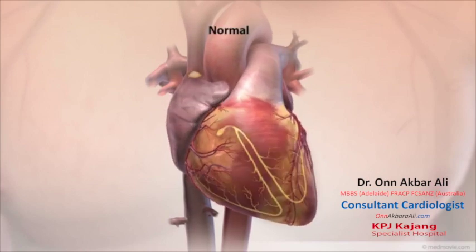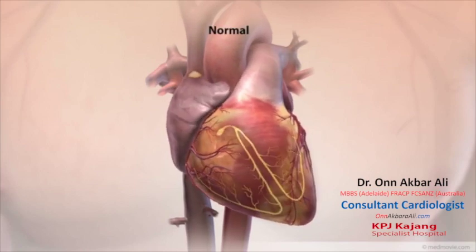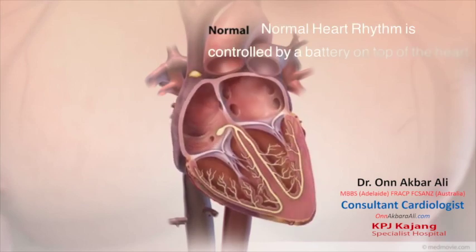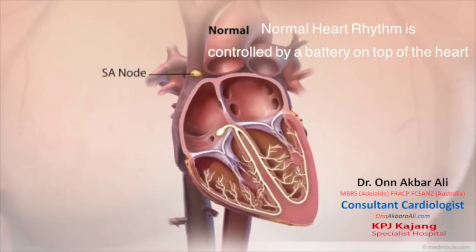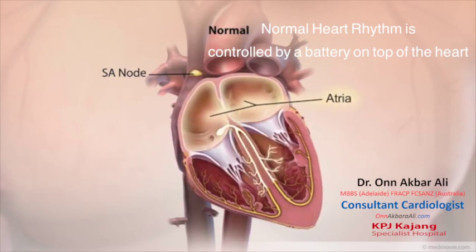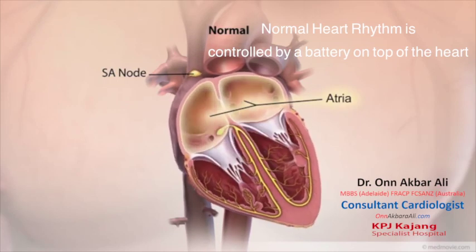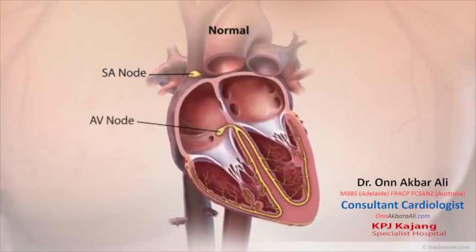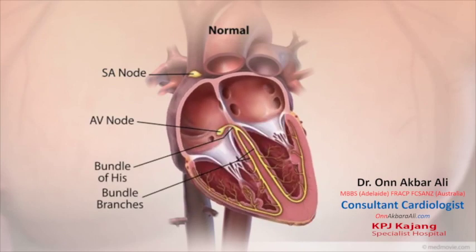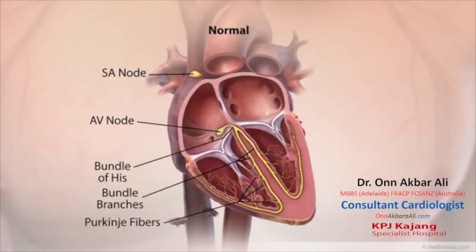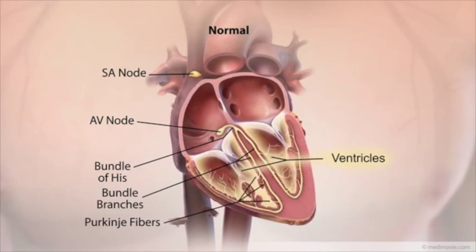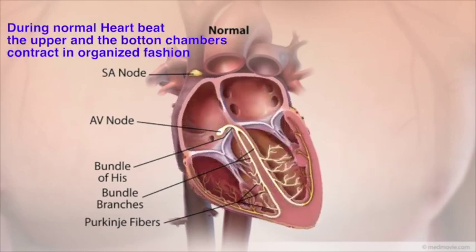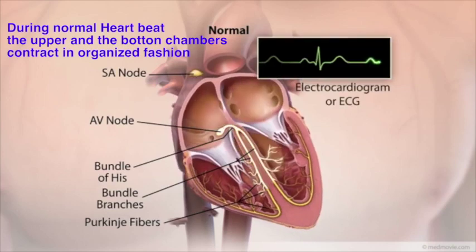The heartbeat is controlled by the electrical system of the heart. This system is made of several parts that tell the muscle of the heart when to contract. The SA node starts the heartbeat, causing the atria, or upper chambers of the heart, to contract. The signal then travels through the AV node, the bundle of His, bundle branches, and Purkinje fibers. This causes the ventricles, the lower chambers of the heart, to contract. The flow of electrical signals produces a normal heartbeat.